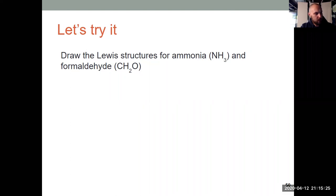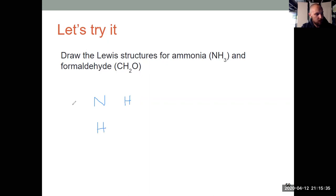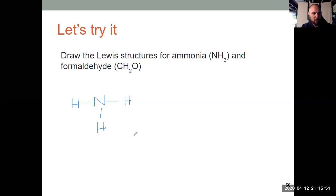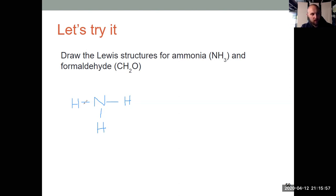Now let's practice drawing Lewis structures for ammonia. Nitrogen goes in the middle, surrounded by three hydrogens. Total valence electron count: nitrogen has five, each hydrogen has one, so eight total. Drawing the skeletal structure uses six electrons (three single bonds, two each). Eight minus six leaves two electrons. There are no octets to complete on hydrogen atoms outside, so the remaining two electrons go on nitrogen as a lone pair. Now nitrogen has an octet — done.